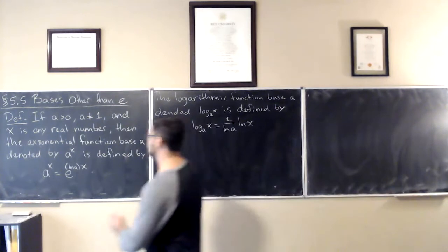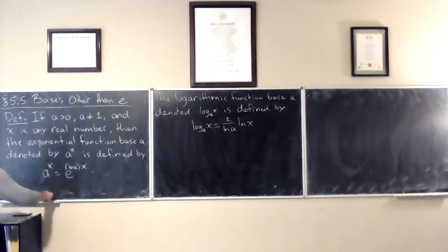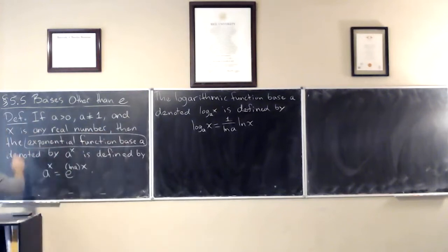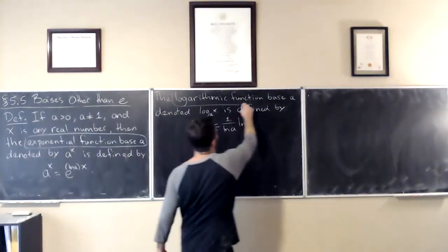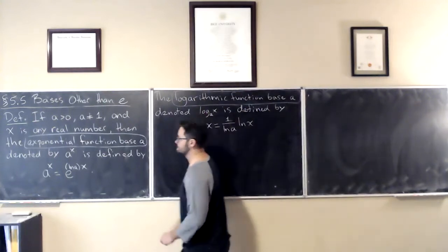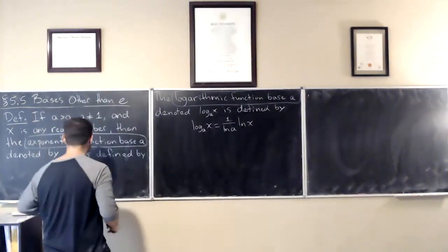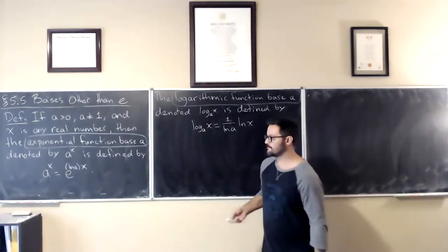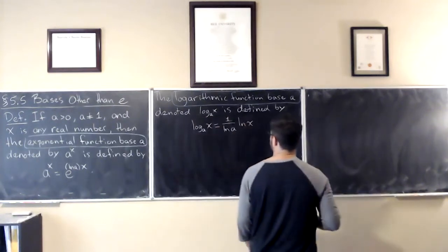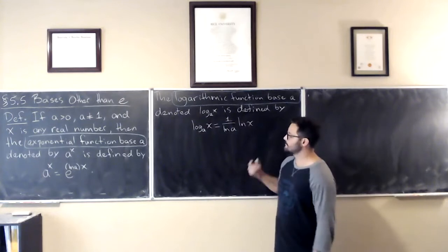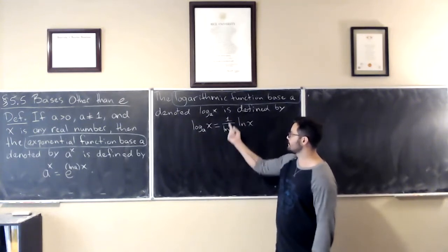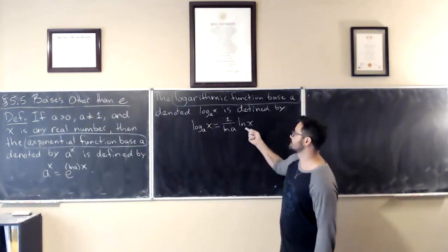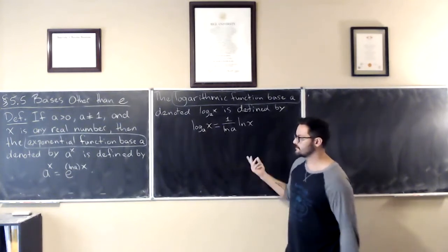So these are the two main definitions of this recording. Notice that when a is equal to e, these all become what we've been studying in the previous two recordings. When a is equal to e, this becomes 1, and then log base e of x is equal to natural log of x, as you would expect from a college algebra course.